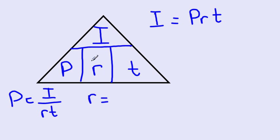If we wanted to solve for R, let's just pretend this R is covered up, so we would have I divided by P times T. And if we wanted to solve for T, we could cover that up, and we have I divided by P times R.